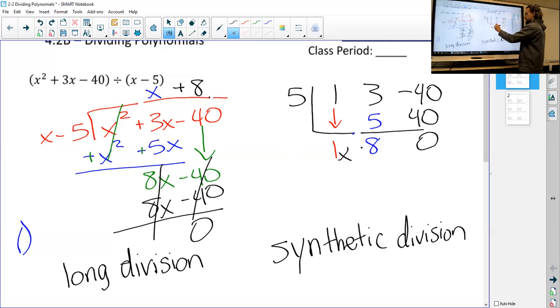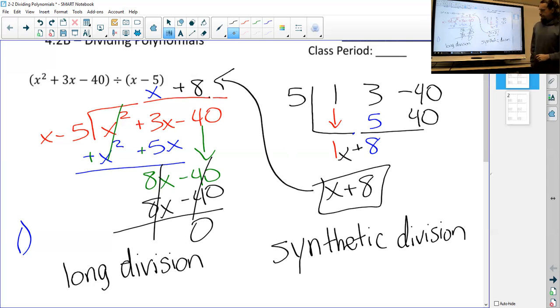Instead of starting with x squared, we're just going to start with x. X drop power is just a number, so it becomes 1x plus 8. This last number is the remainder—since it's 0, I don't even worry about it. So what am I left with? 1x plus 8, or simply just x plus 8. That is the same answer that we got over here. A little tricky if you've never done it before. Let's try one more.